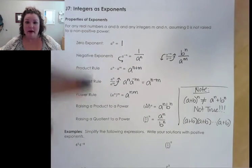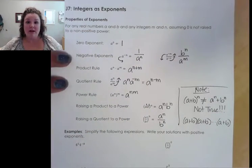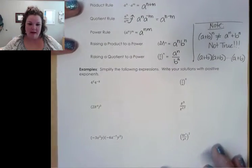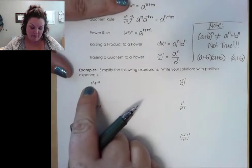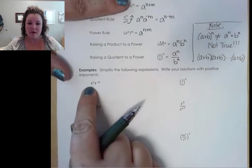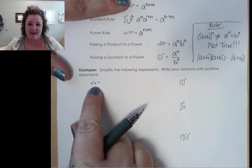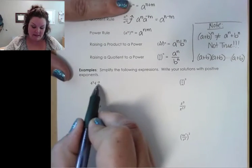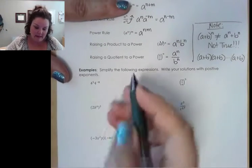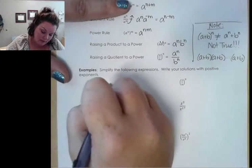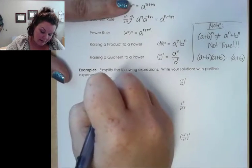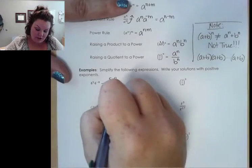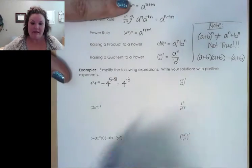Using these rules, let's look at some examples. At the bottom of the page, we have 4 to the 5th power times 4 to the negative 8th. The 4s are the same base, so I can just combine their exponents and do 5 plus negative 8, which gives me 4 to the negative 3.